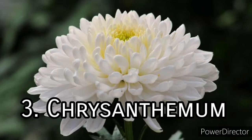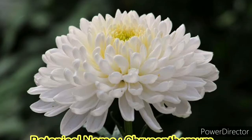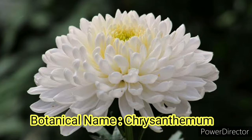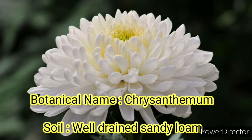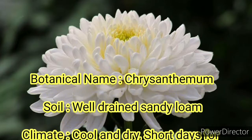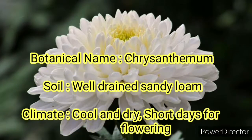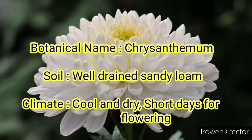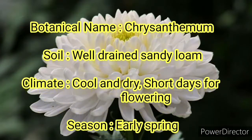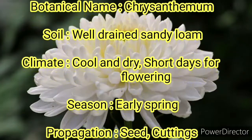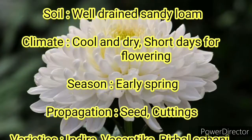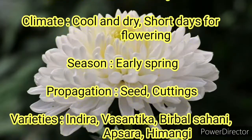The next one is Chrysanthemum. Its botanical name is also Chrysanthemum. Soil required is well-drained and sandy loam. Climate should be cool and dry, as it is a short-day plant for flowering. The season in which it is grown is early spring, and propagation is done through seeds and cuttings.